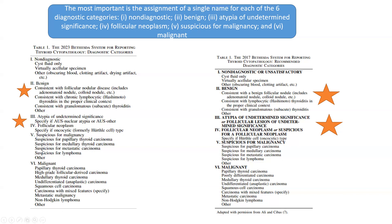Category four for thyroid FNAC results is follicular neoplasm. We should specify if it is oncocytic, formerly referred to as Hürthle cell type. In category four, the term 'suspicious for follicular neoplasm,' which was initially used, has now been removed. It is now simply labeled as follicular neoplasm for category four.